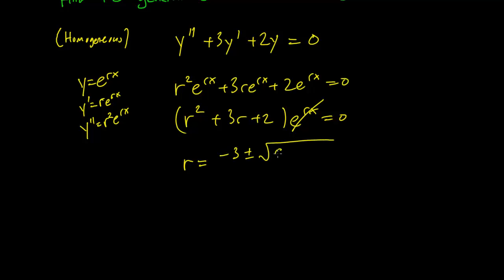Minus 3 plus or minus √(9 - 4ac) over 2. So this is just going to be minus 3 plus or minus √1 over 2. So r is either going to be -1 or it is going to be -2.